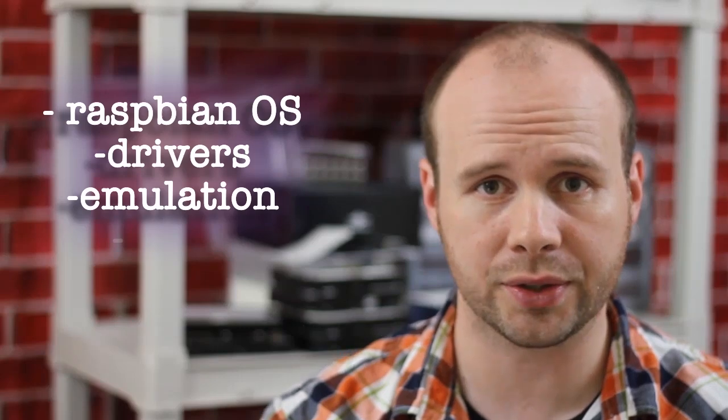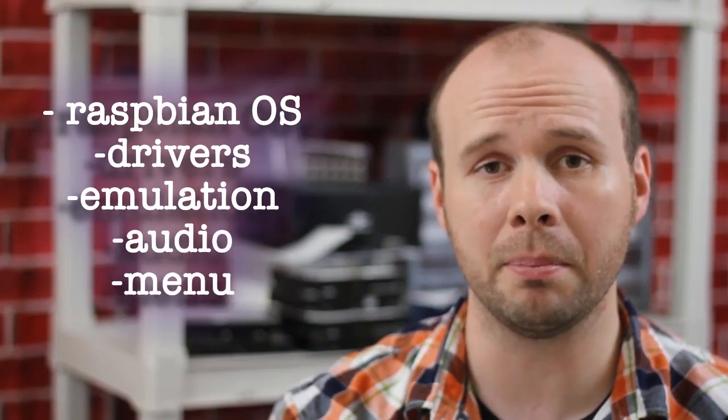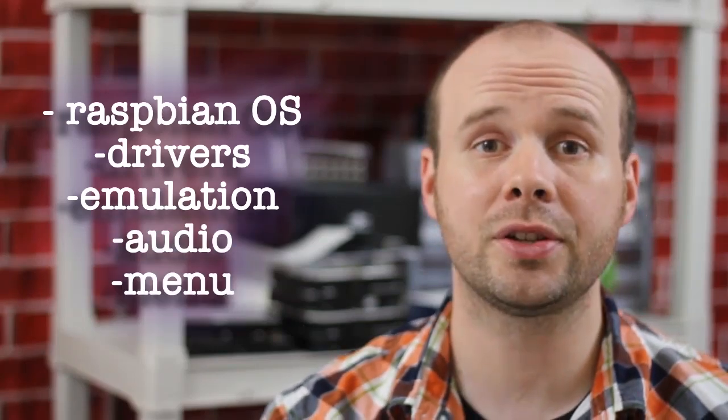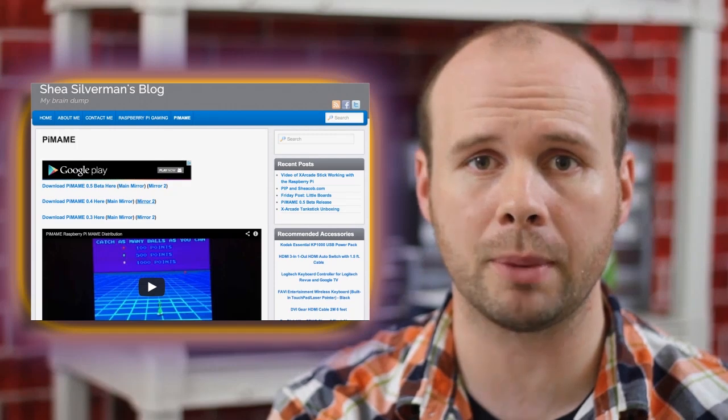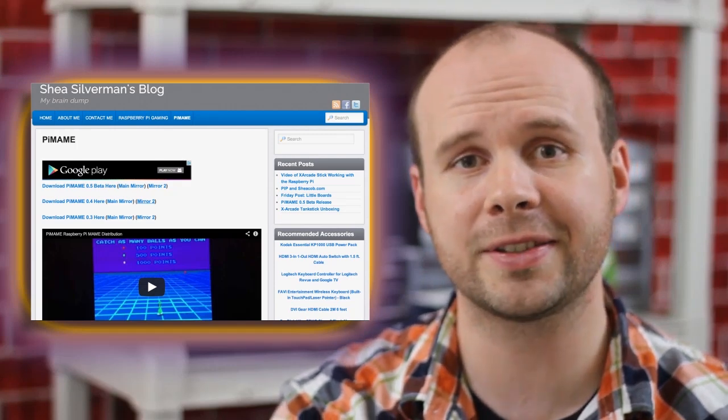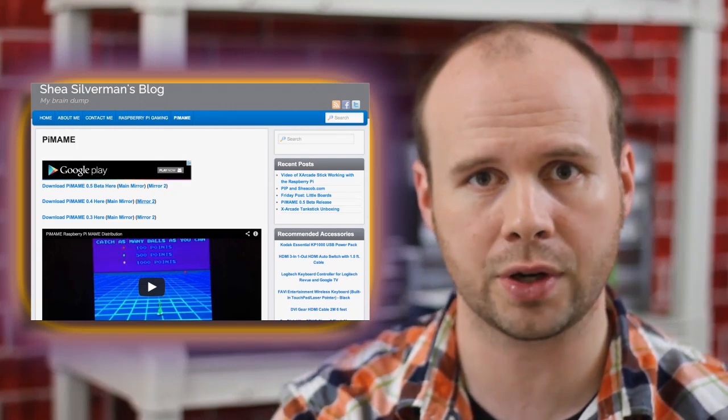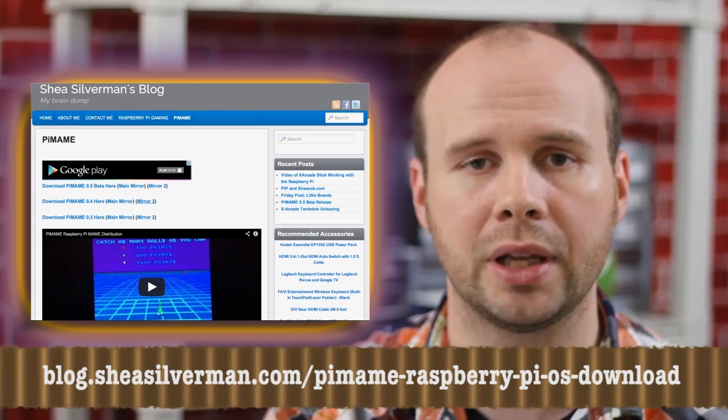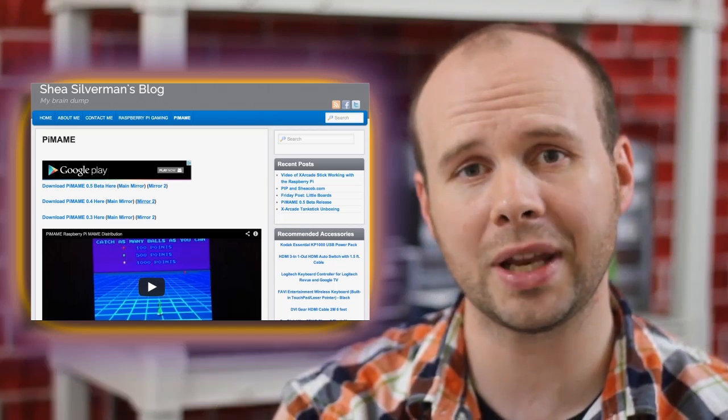Normally, in order to get all of this working, you'd have to install the Raspbian operating system, drivers, emulation software, audio software, and menu software. But thanks to the helpful minds over at the Shea Silverman blog, they've created a single installation for all of this called pi mame, which you can download here. Just download it and burn it to your SD card.